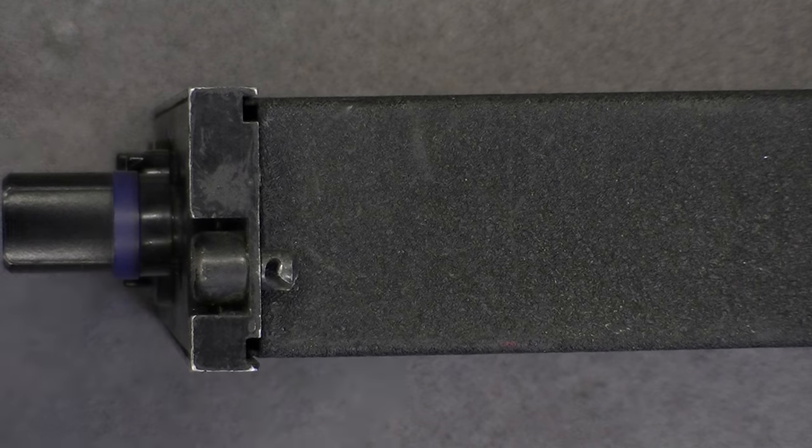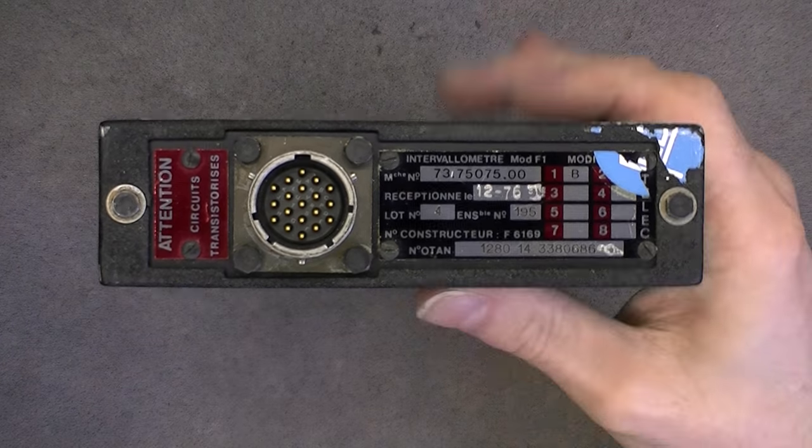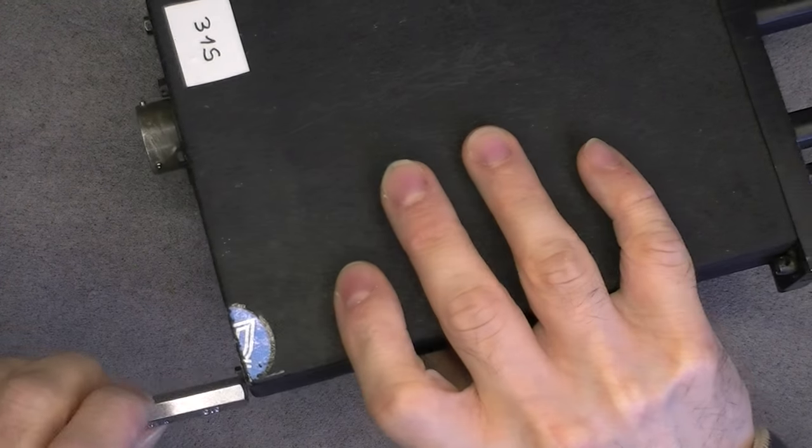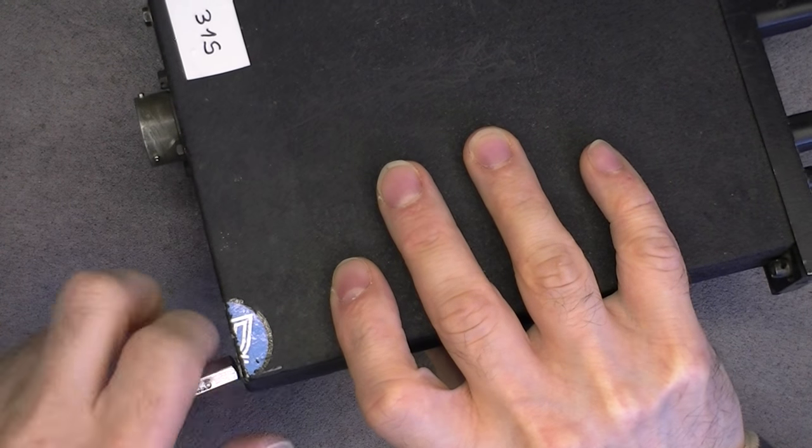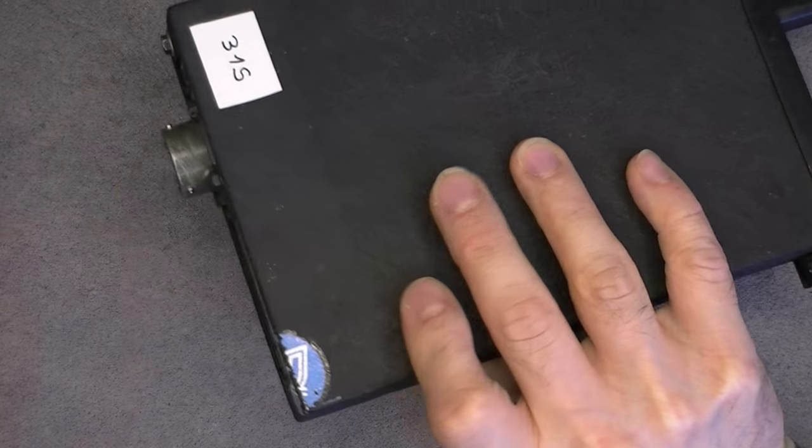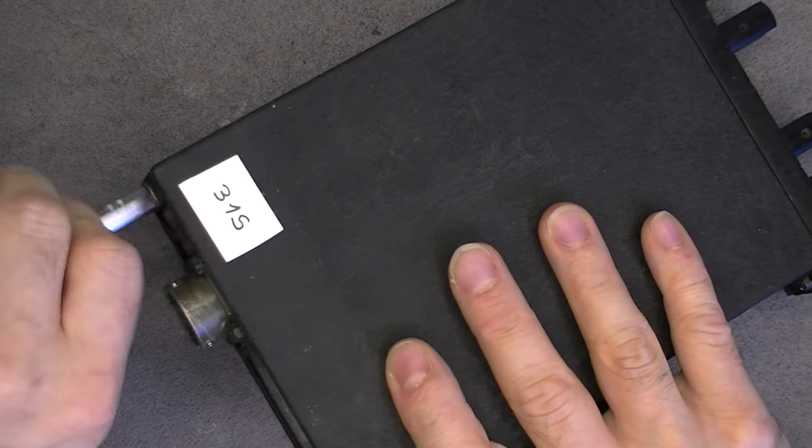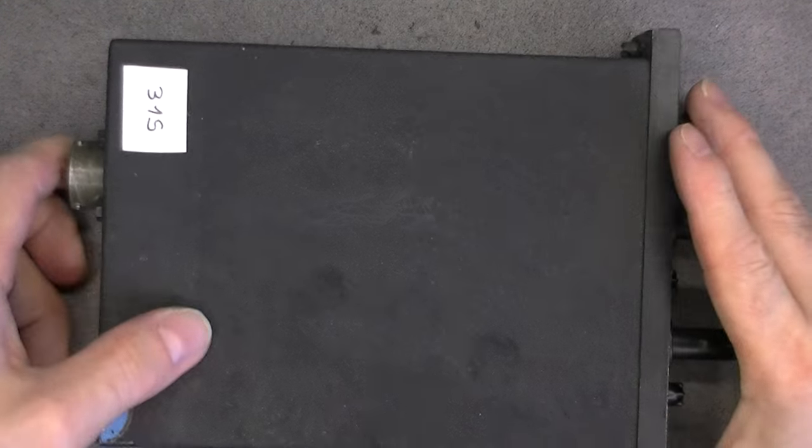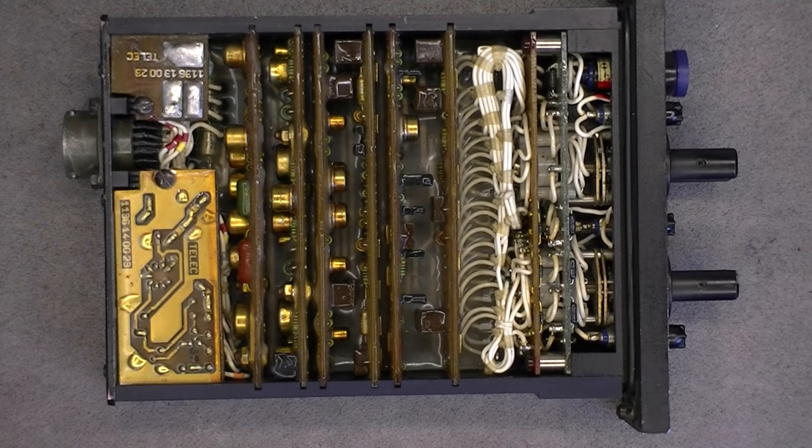So now, what do we have in this? I have just two screws to undo for the cover. It is quite unusual. We have here hexagonal head screws, not something you see very often. And it should come right off. And yes, here we are.